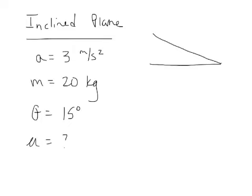For a problem like this, if the object is moving, what kind of mu is it? Mu k, or mu kinetic, as opposed to static, or mu s. If it's stationary we're looking at static friction and the static coefficient of friction, but because it's moving we're looking for the kinetic coefficient of friction. So let's start by drawing our free body diagram — FBDs help a lot on these kinds of problems.